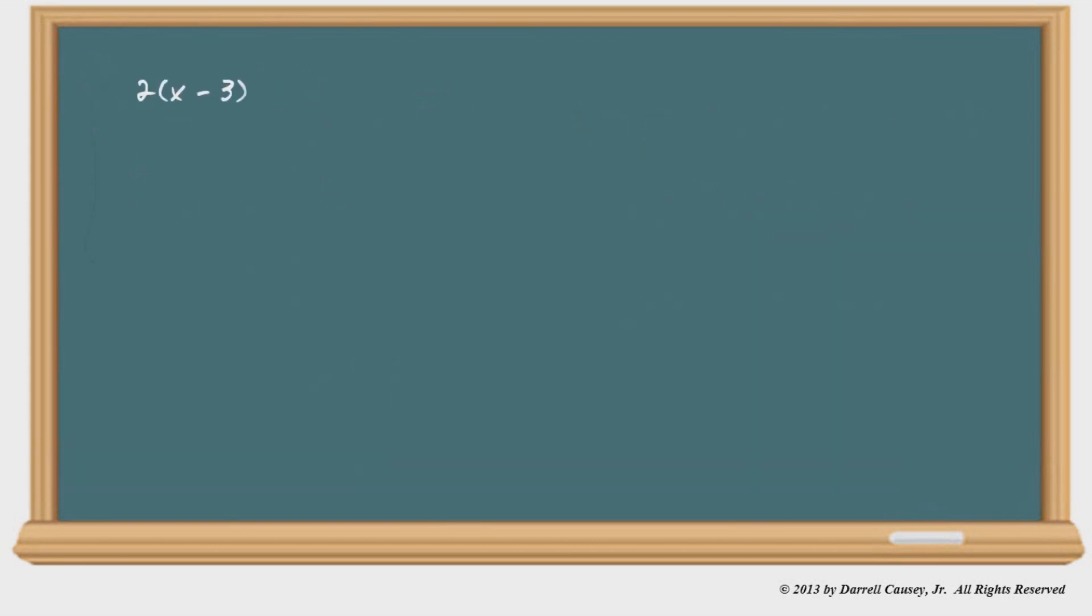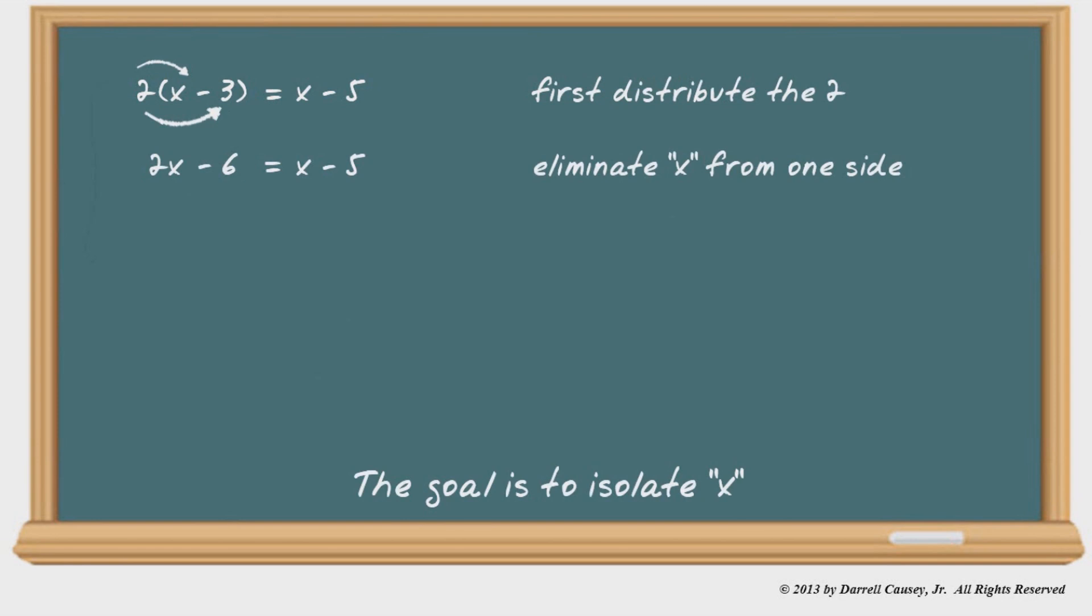All right. Let's try this one here. With some parentheses. And we have x on both sides. Again, the goal is to isolate x. But first, we must get rid of the parentheses. And so we'll distribute the two. And notice how it's distributed to everything inside. And now we have 2x minus 6 equals x minus five. I'm going to go ahead and eliminate x from one side. So I'll minus x from both. And by doing that, notice we'll get x minus six equals negative five. Now add six to both sides. And we get x equals one. Not too bad, huh?